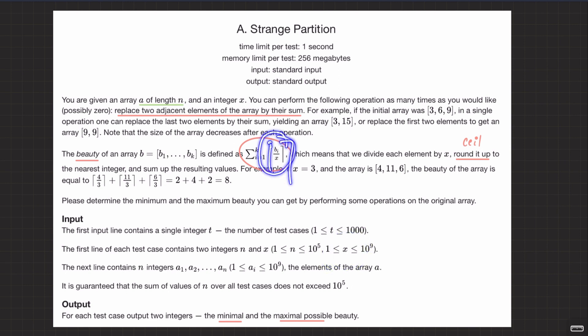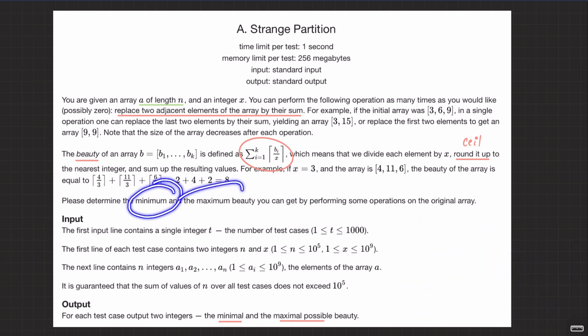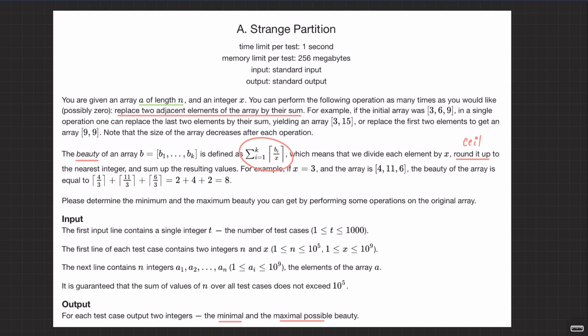The beauty is summation of ceil(bi / x). So if you have an array a1, a2, a3, the beauty is ceil(a1/x) + ceil(a2/x) + ceil(a3/x). What they are asking is: what is the minimum and maximum beauty you can get by performing some operations on the original array? There is no bound on the operations — just figure out the minimum and maximum beauty you can achieve.